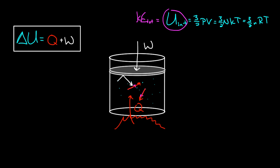Getting the sign right is important. If you're doing work on the gas — compressing it — you're adding energy to the gas. But if you let the gas push up on the piston and the gas expands, pushing the piston up, then the gas is doing work. That's energy leaving the system, so if the gas does work you subtract that. Work done on the gas: energy goes in. Work done by the gas: energy goes out, and you'd subtract that from delta U.